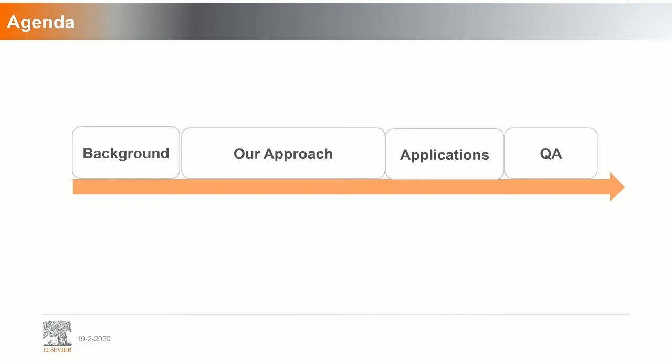I've divided my talk today into four sections. I will start with a background about Elsevier and what we have been working on using machine learning and AI. Then a brief introduction about adverse events and challenges in literature mining. Then I will explain our approach to extracting adverse events from literature and FDA drug labels, and some applications where we can apply these machine learning models in the pharmacovigilance area. Finally, we will end with a Q&A session.